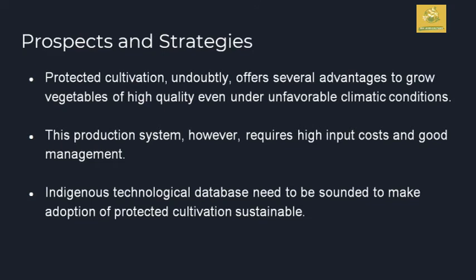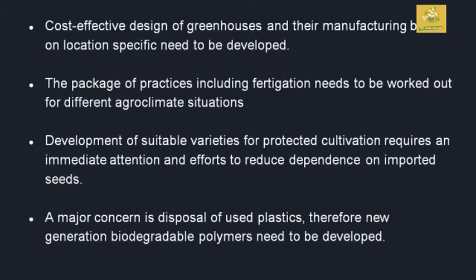The prospects and strategies for productive cultivation: productive cultivation offers several advantages to grow vegetables at high quality even under unfavorable conditions in many areas. However, the production system requires high investment as well as good management, and indigenous technology databases need to be developed to make the adoption of productive cultivation self-sustained. Cost-effective designs and management practices based on location-specific needs should be developed. Package practices including cultivar selection need to be worked out for different agro-climatic conditions. Development of suitable varieties for productive cultivation requires immediate attention, and efforts should be made to reduce dependence on imported seeds. A major concern is the disposal of used plastic, and therefore biodegradable polymers need to be developed in this field.